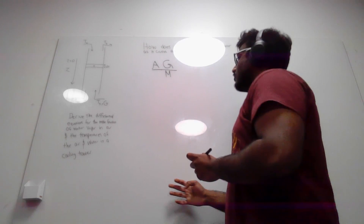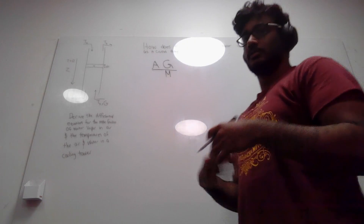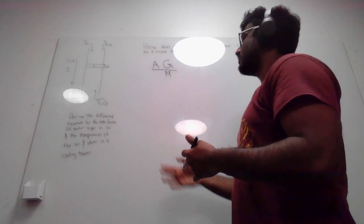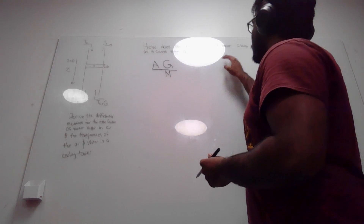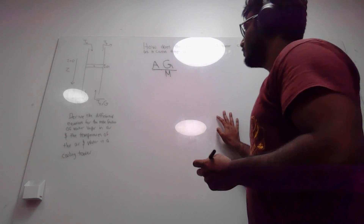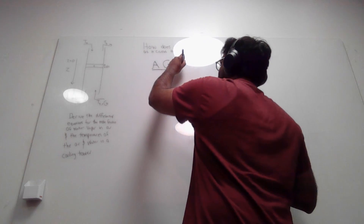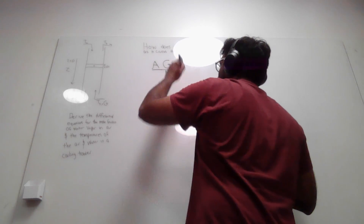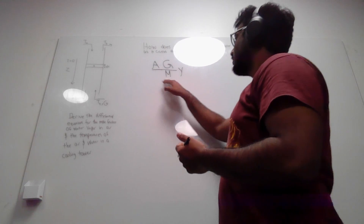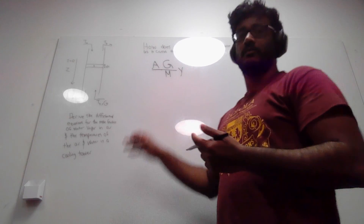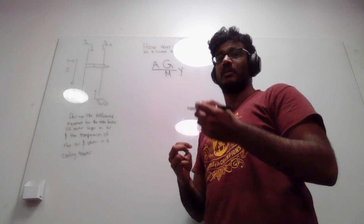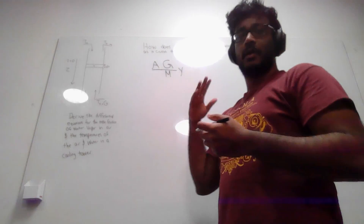That expression gives us the total flow for the whole system, but we are specifically focused on water. So we multiply by y, the mole fraction of water. This expression now gives us the number of moles of water vapor passing through our packing material.